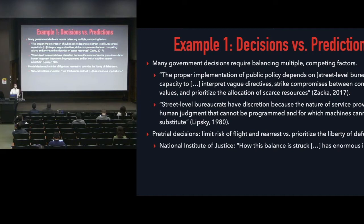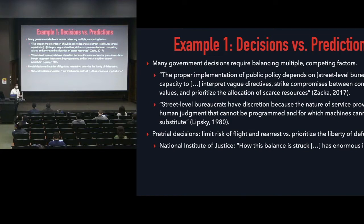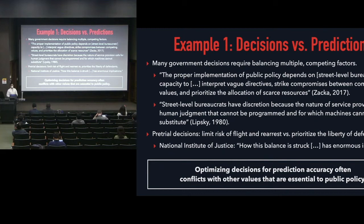With pretrial decisions specifically, on the one hand there's a goal of reducing the risk of flight or rearrest, yet on the other hand, a central value is to prioritize the liberty of defendants to reduce the harms associated with pretrial detention. These two values are in direct conflict. Public policy in this setting ultimately depends on a balance struck between competing factors in ways that cannot be pre-programmed. Optimizing many decisions for prediction accuracy often conflicts with other values essential to public policy.